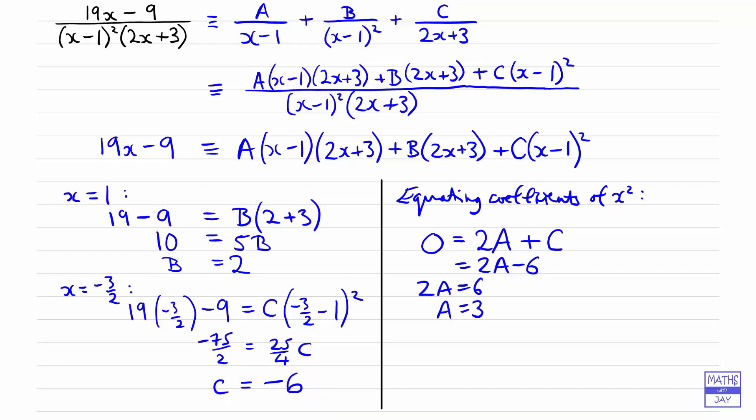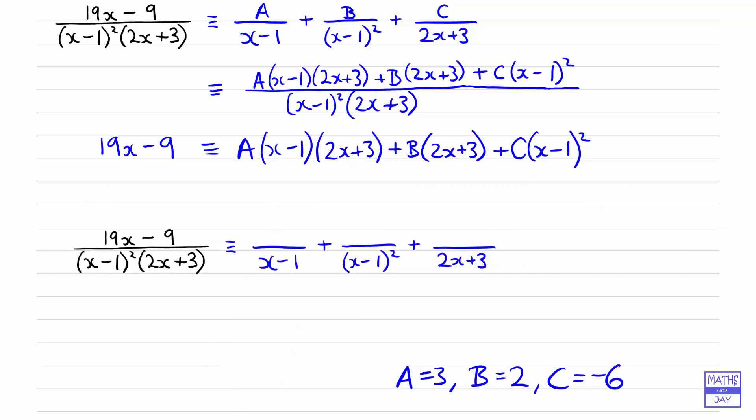So we have found all three numbers that we set out to find. So let's just substitute those in. So, A is 3, B is 2, and C is minus 6. So it would be better, instead of writing the minus 6 like that, if we replaced the plus in front of the fraction by a minus and just had 6 on top. And there we are. So that's the answer.